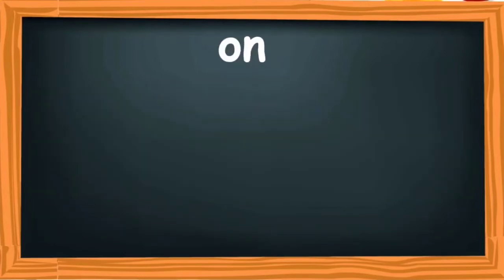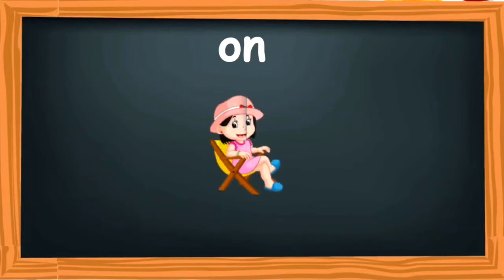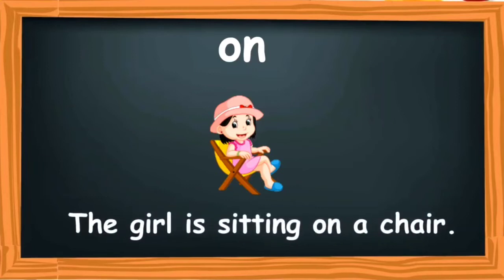The word is 'on.' Repeat after me — the word is 'on.' It refers to a place, position, or surface area. Look at this image now. What can you see? A girl, right? And where is the girl sitting? She is sitting on a chair. I have used the word 'on' in a sentence like: 'The girl is sitting on a chair.'